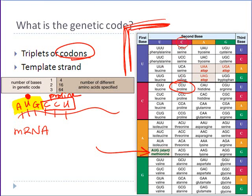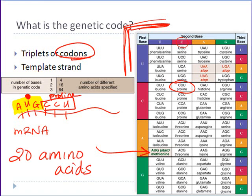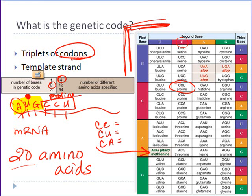Why is it that we read messenger RNA in groups of three? Well, there are 20 distinct amino acids that our body relies on, so we need a coding system that can code for all 20. If we used one nucleotide to represent amino acids, we could only code for four because there are only four nucleotides. If we used pairs of nucleotides — CC equals one amino acid, CU equals another, CA equals another — we would only be able to code for 16 total amino acids.